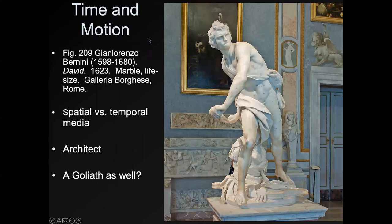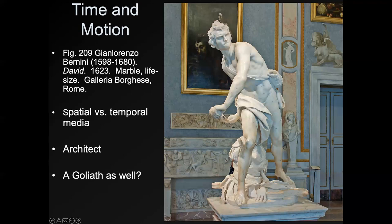So time and motion — we're going to get a little more specific here. This is Bernini's David. We talk about spatial versus temporal media. Temporal media would be things that change in time, whereas spatial relates to how something relates to the surrounding space. Bernini didn't just make this sculpture — he also designed the architecture of the room. When you see this, knowing the story of David and Goliath, you can almost imagine the rock about to fly through the room. Even though the piece is still, it gives the effect of motion and implies something outside the sculpture's own space — you imagine the Goliath he's aiming at.